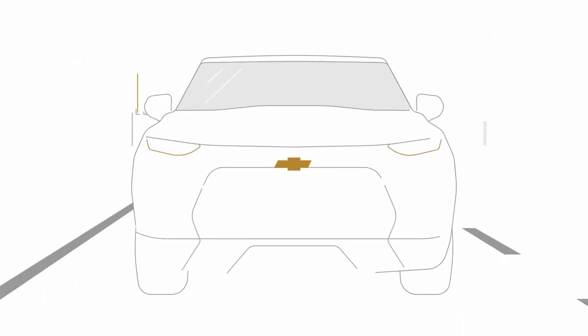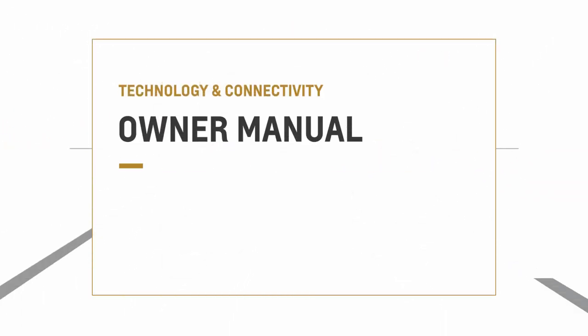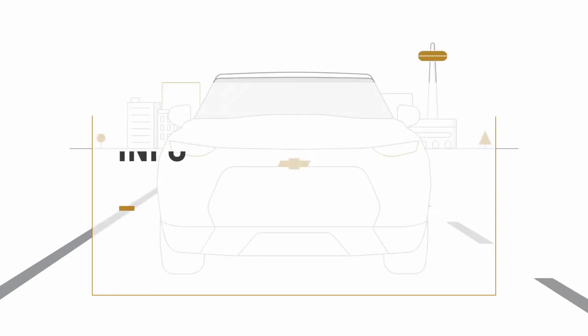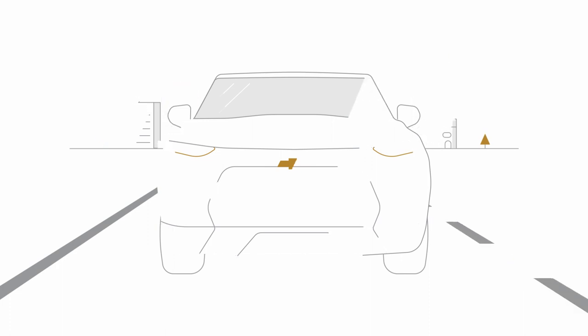Got questions or looking for information about your vehicle? Your vehicle owner manual is the place to go. This is where you'll find important information to help make you a better driver and car owner, including vehicle maintenance and troubleshooting advice.